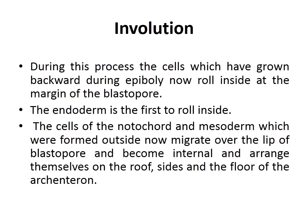In involution, the cells that have grown backward during epiboly now roll inward at the margin of the blastopore. They leave the blastopore uncovered and surround the endoderm. The endoderm is the first to roll inside, and then the notochord and mesoderm cells, which were near the ectodermal layer, also migrate over the lip of the blastopore to become internal, arranging themselves on the roof, sides, and floor of the archenteron.